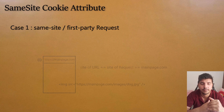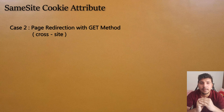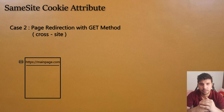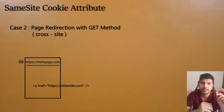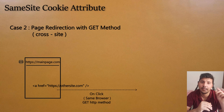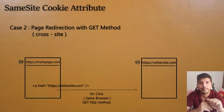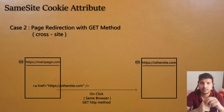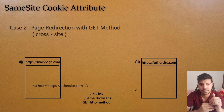The second case scenario is a page redirection from your main page to another site. For example, there is a page on mainpage.com with a link inside an anchor tag. If you click it, there will be a redirection to othersite.com, and the HTTP method used during the redirection is GET. We will reference this as page redirection with the GET HTTP method.